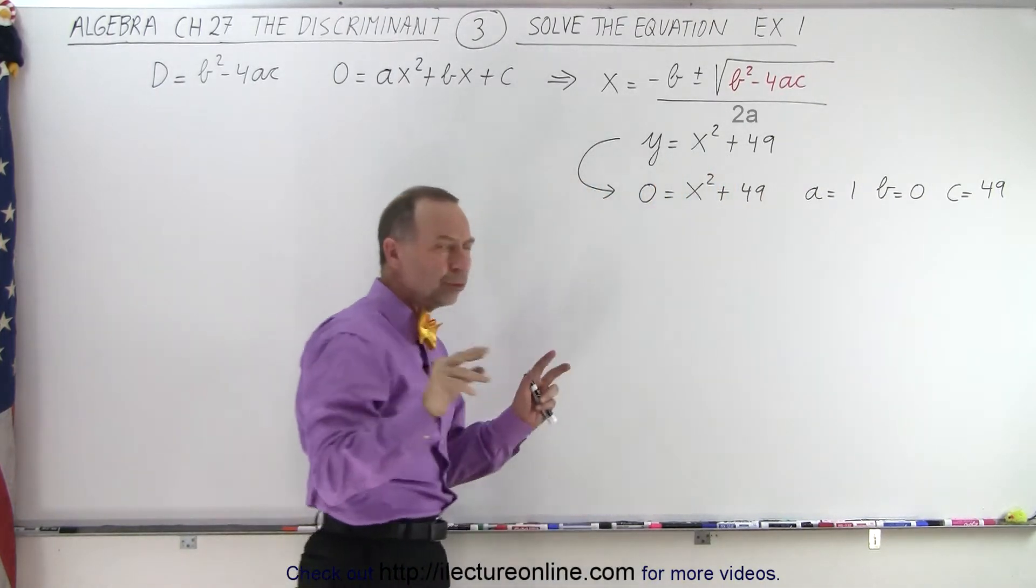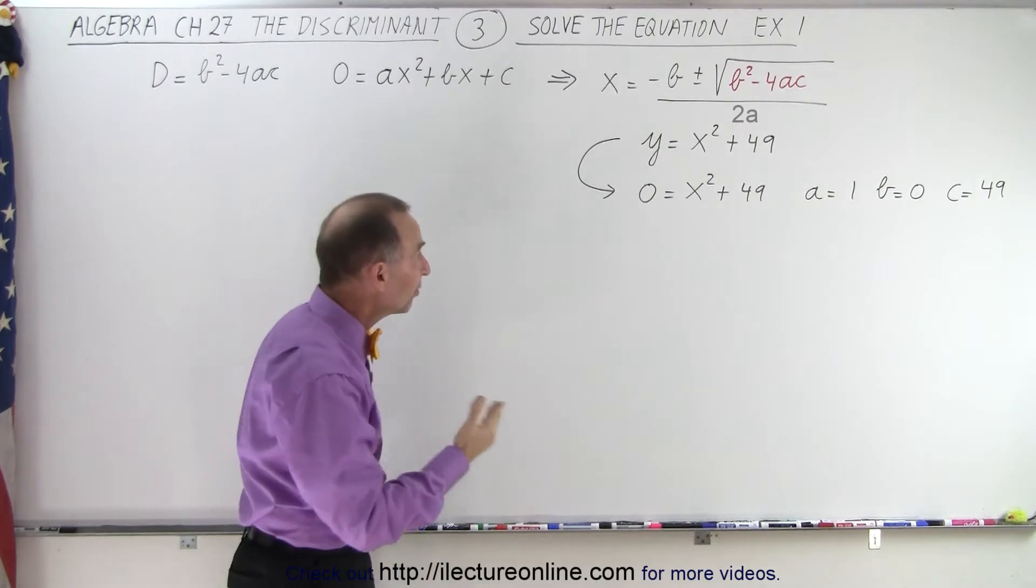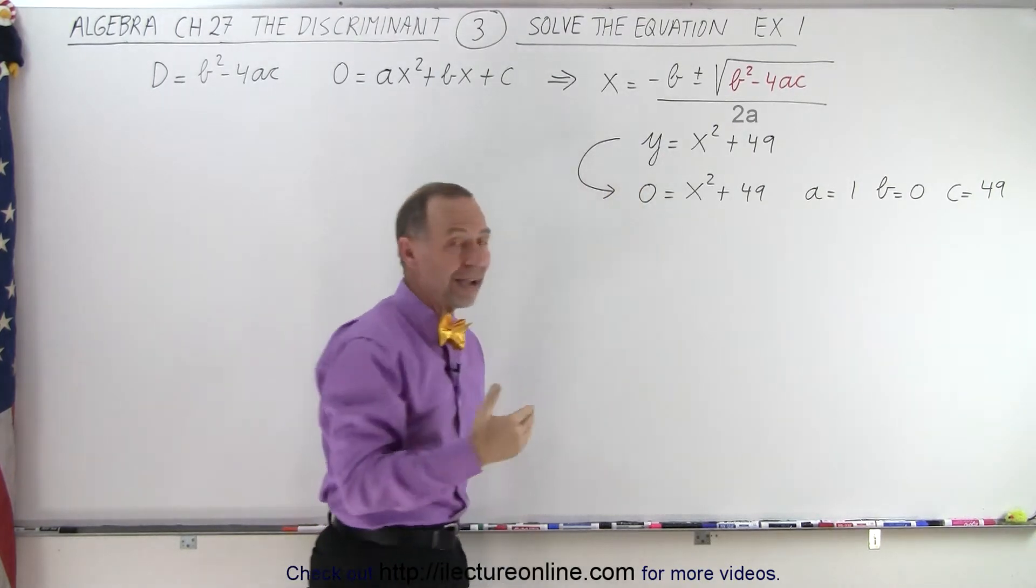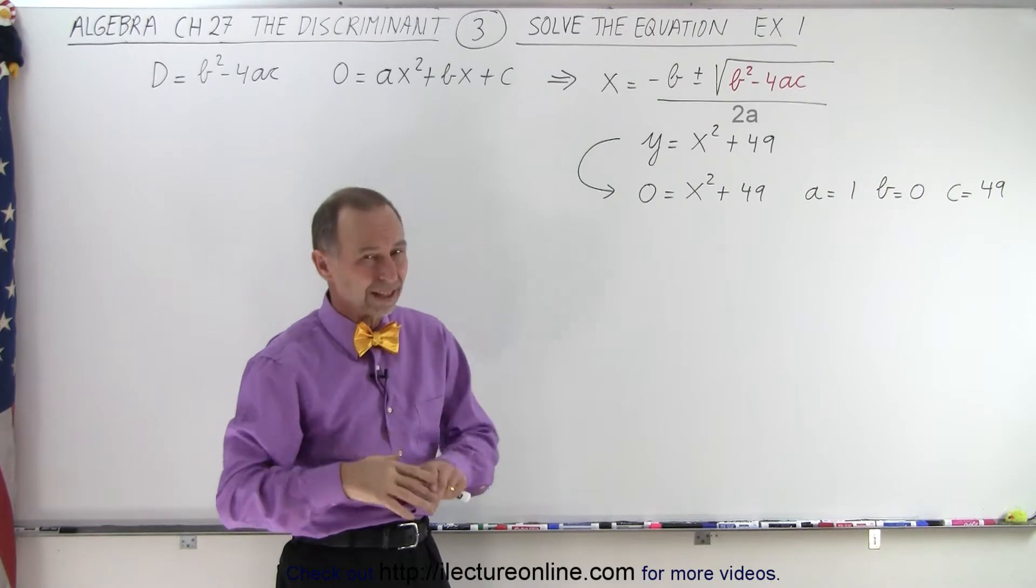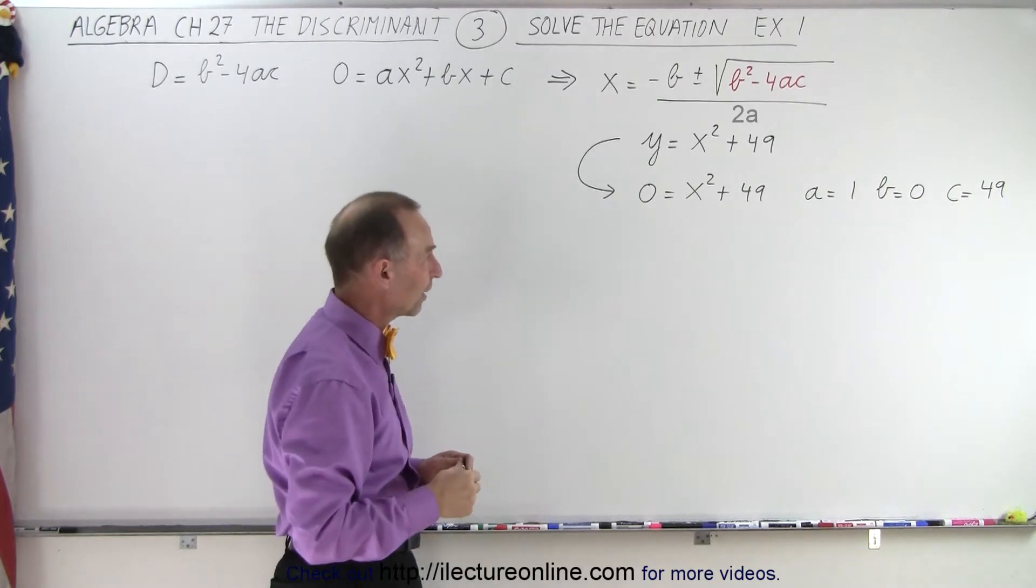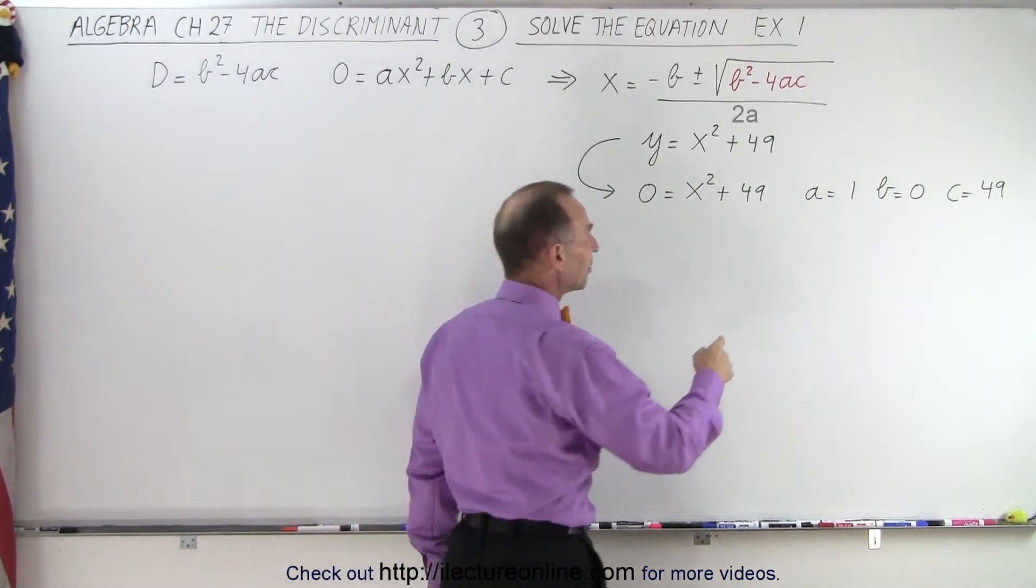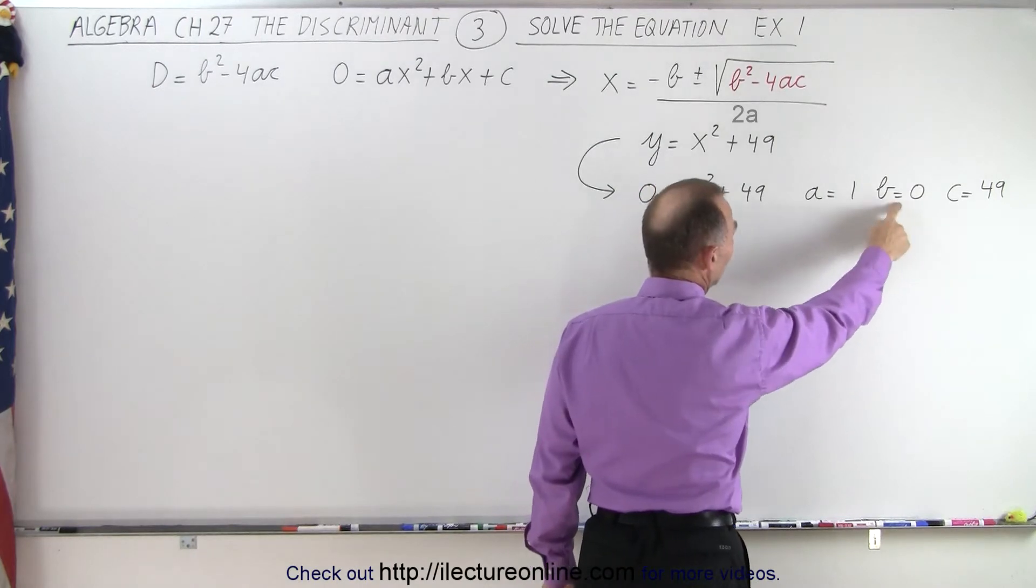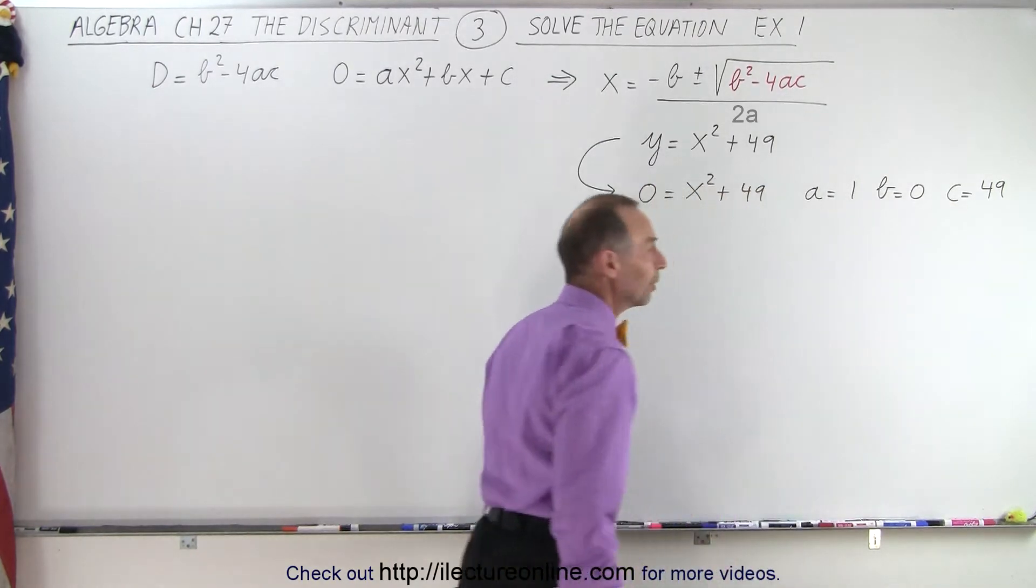To find the roots of the equation, we set y equal to 0 to find where this equation crosses the x-axis. I will graph it to show you what that looks like. First we need to identify the coefficients: a = 1, b = 0, and c = 49.